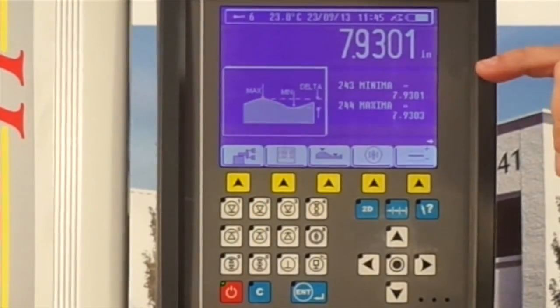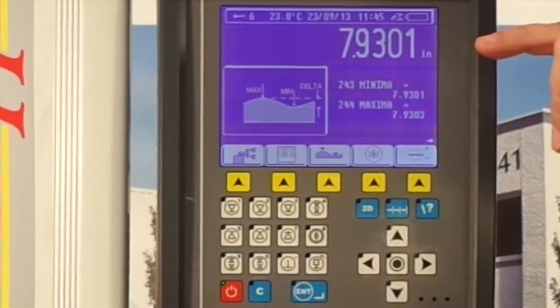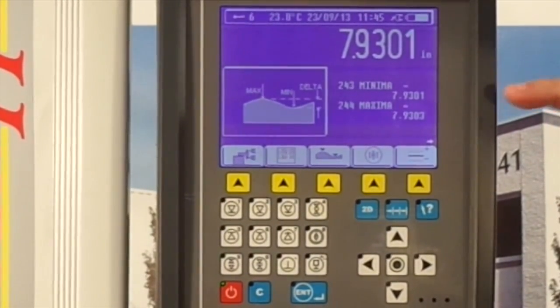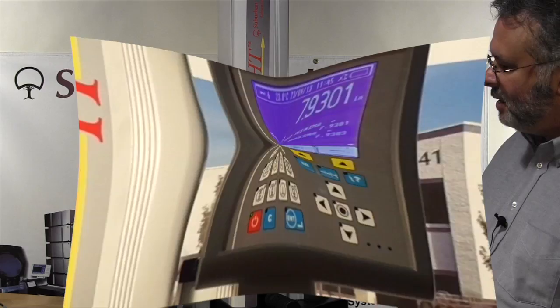Now that I'm finished it's telling me that that surface from one end to the other is 7.9301 to 7.9303. So we're within two tenths of a thousandth on the sweep.